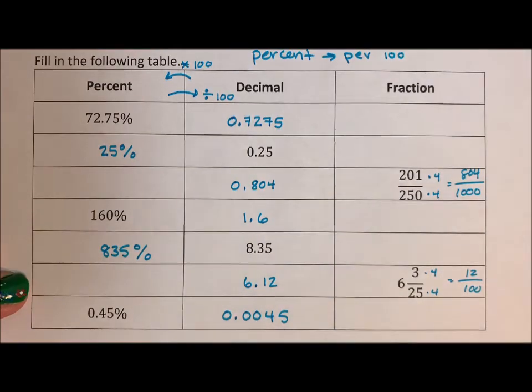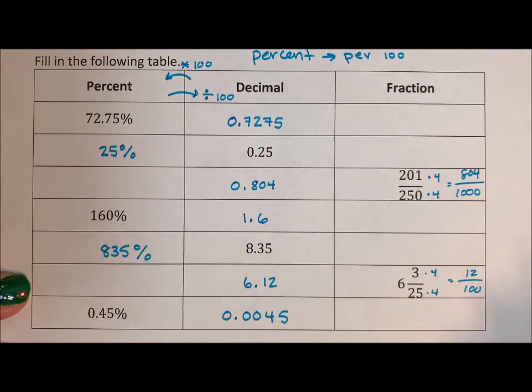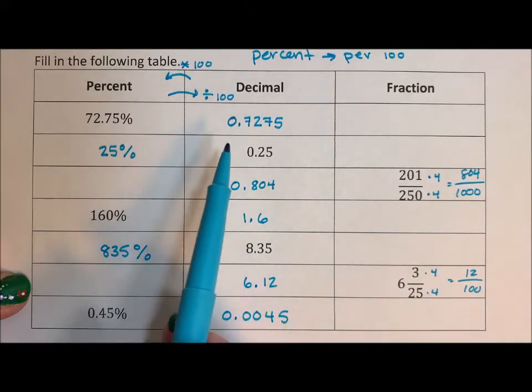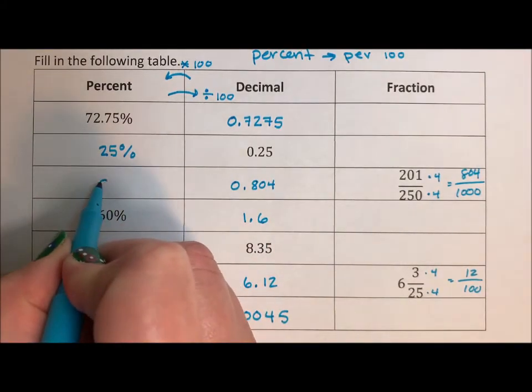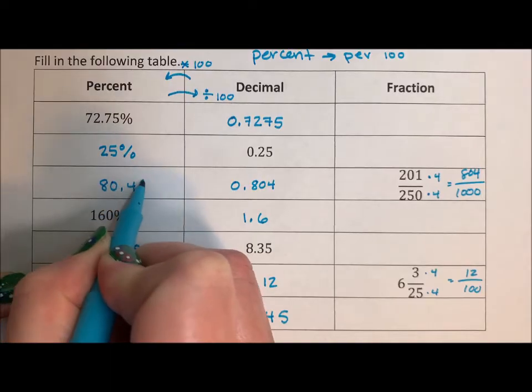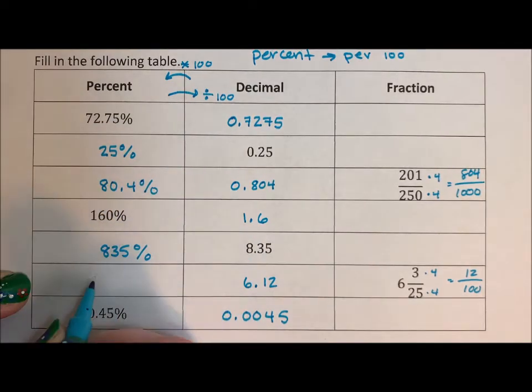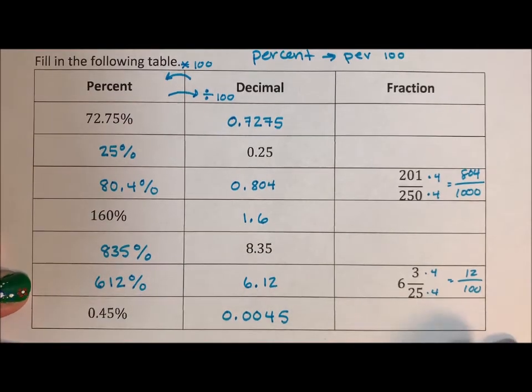So now we can multiply by 100 to get 80.4%. We can multiply by 100 to get 612%.